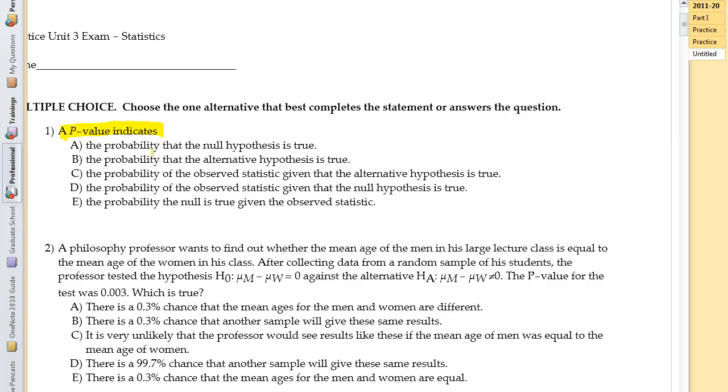A p-value indicates what. The probability that the null hypothesis is true? That's not really what's going on here. The probability that the alternative hypothesis is true? This is definitely not true because the p-value always goes with the null hypothesis. The probability of the observed statistic given that the null hypothesis is true, this is it. This is what makes us happy right here. So the answer is going to be D because the p-value measures the probability of our given sample being that far away from the null hypothesis if the null hypothesis is true.